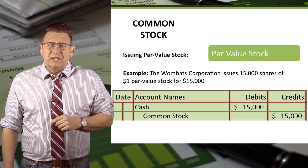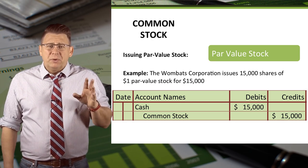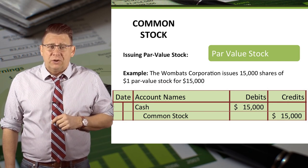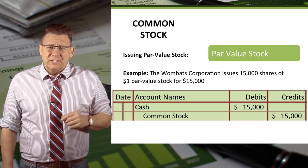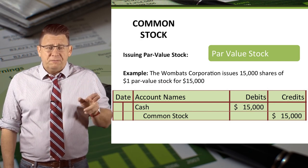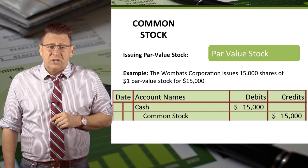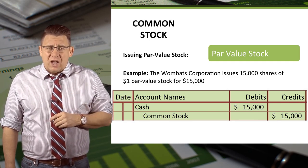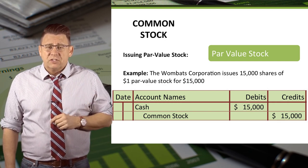Let's look at some examples of issuing different types of common stock. Here we have a simple example of par value stock being issued at par value. You will never see this type of transaction in real life, but it's a good place to start. In this example, the Wombat Corporation issued 15,000 shares of one dollar par value stock for $15,000. Cash is debited for $15,000, and common stock is always credited for its par value, which in this case is also $15,000.